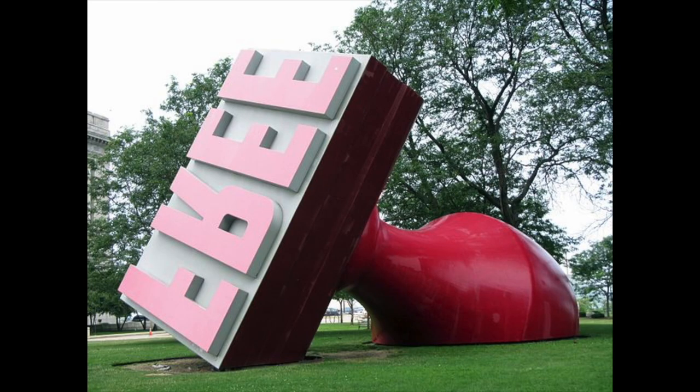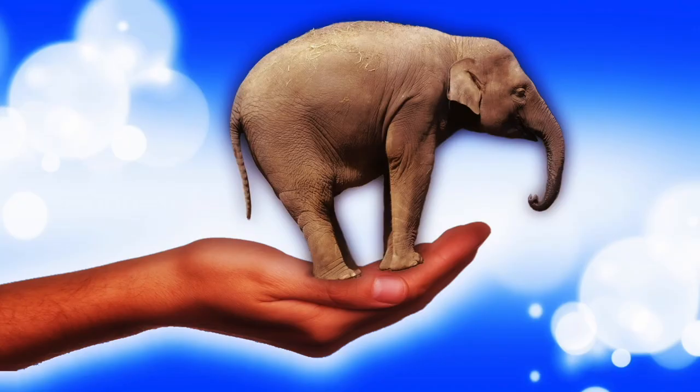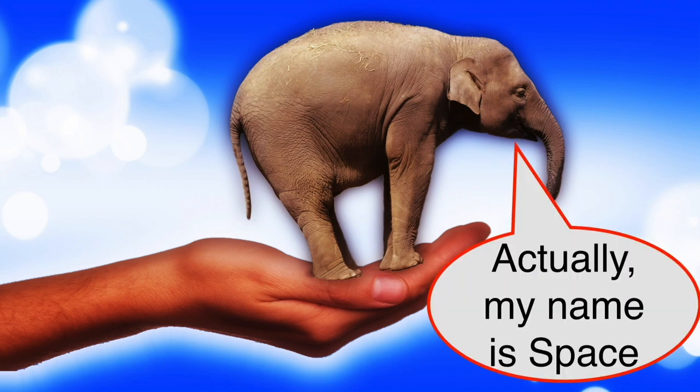Sometimes artists change the scale to make something really small into something really big. This is the freedom stamp. And it's located right nearby in Cleveland, Ohio. And you can see it's normally something that's really small. But the artist chose to make it very big. It makes a big impact now. In this case, the artist changed the scale of the elephant to make it look awfully strange. Hey, I think that elephant's name is Harold. Huh, that's funny. Actually, my name is Space. My cousin's named Harold.